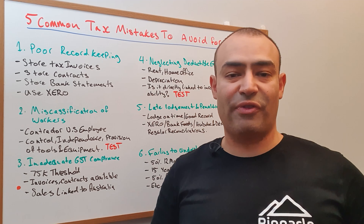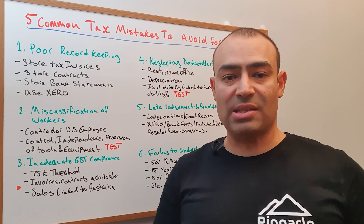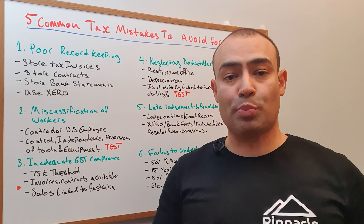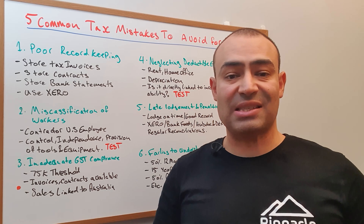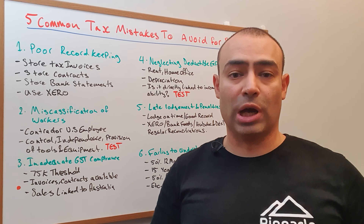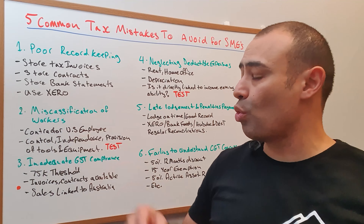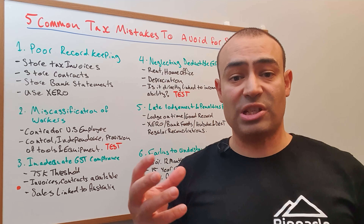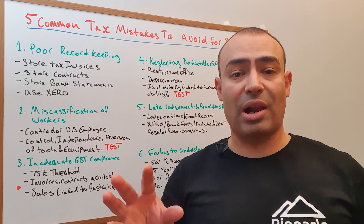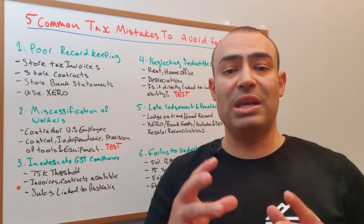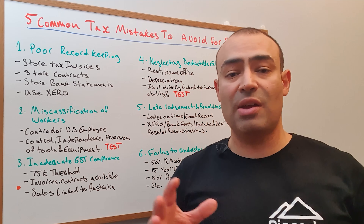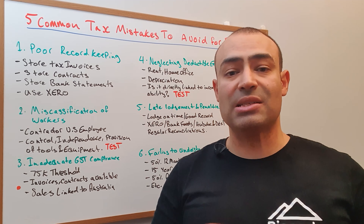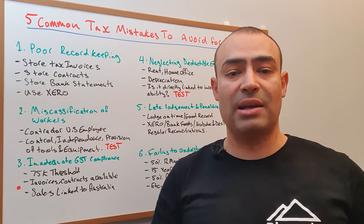The first mistake to avoid making is not having sufficient records. What that means is that you should be storing all your tax invoices and your contracts, which prove that you've made a payment or a particular sale, in a particular folder — or even better, have a program like Xero which allows you to save those transactions and the substantiation for those transactions in the cloud and then match them to the bank feed. This is very important: if you ever have an audit, the first thing the authorities will want to see is the records of various income and expense items.